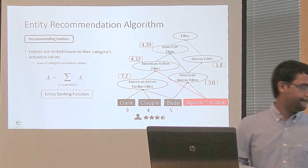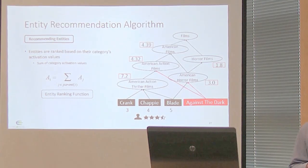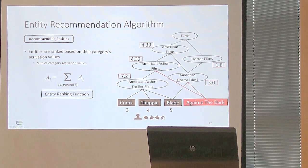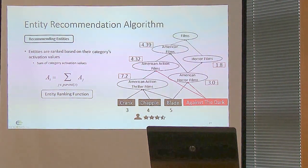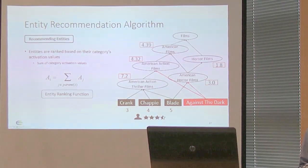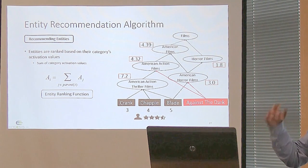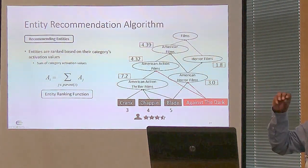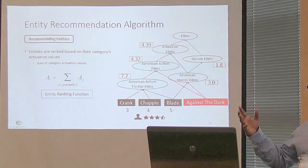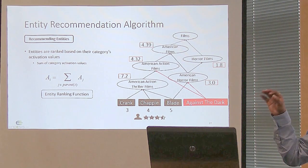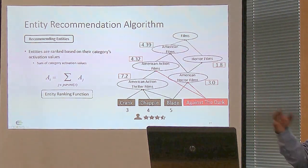A committee member asks why activation values represent the most important recommendations. The presenter explains that spreading activation can be customized — the activation function takes input from leaf-level nodes and, as categories go higher in the hierarchy, they accumulate initial activations through their relationships. The activation values reflect the user's interest because they are based on what the user has already rated. User ratings are taken as input for entity activations.